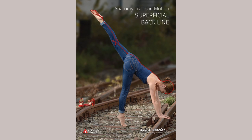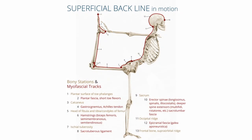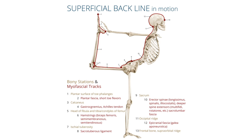The supportive and quietly persevering superficial backline is a continuous myofascial meridian that connects the back of the body. From the underside of the toes it runs up over the heel, up the back of the legs, over the sacrum, along the spine, and over the head where it attaches to the eyebrow ridge. The superficial backline fascially and muscularly supports an upright posture.